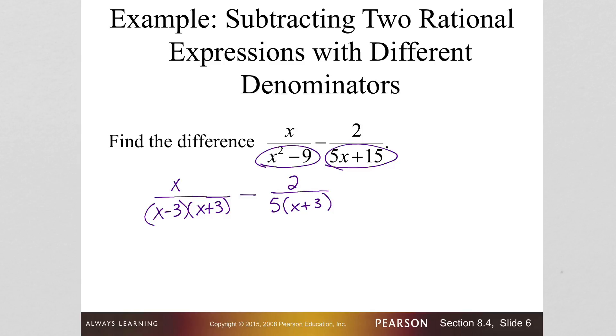So now take a look and see what factors are all different. And we need to have at least one of each of them. If there are two that occur, then you have to have two of them. So in this case, what we have is we've got one x plus 3 that occurs in both. So they have that that is the same. This one has a 5, and this one has an x minus 3. So our common denominator is going to be 5, x minus 3, x plus 3.